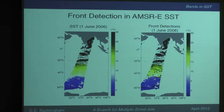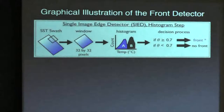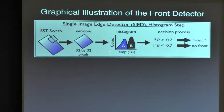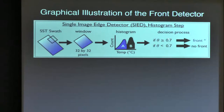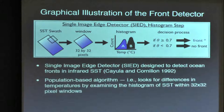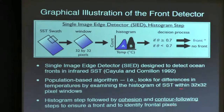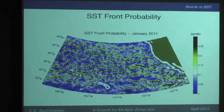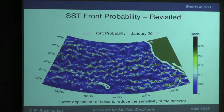Here's an example of a swath over the Indian Ocean with front detectors overlaid. The detector looks at small windows within the swath, examines the histogram of pixel temperatures, and if there's a bimodal population, identifies a front. There are additional steps involving cohesion and contour following. It performs better than a simple gradient detector and tends to identify weak fronts as well. This shows the SST front probability — the original 1992 algorithm and my modified version that reduces sensitivity to the background temperature gradient.